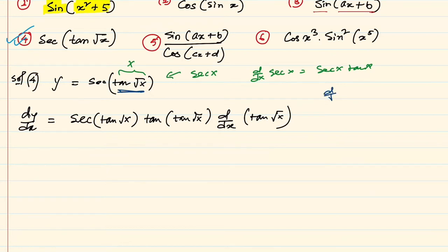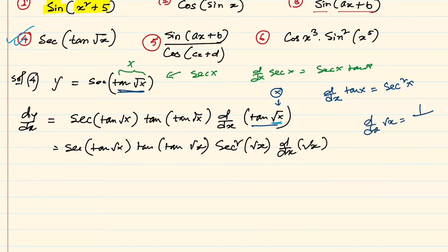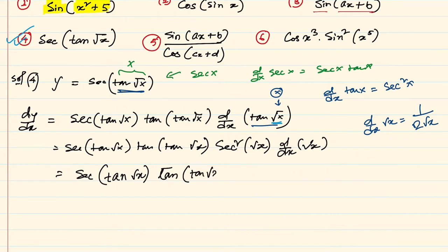Therefore dy/dx = sec(tan(√x))·tan(tan(√x)), and then we differentiate tan(√x). Derivative of tan x is sec²x, so treating √x as x we get sec²(√x). Then we differentiate √x, and the derivative of √x is 1/(2√x). So the result is sec(tan(√x))·tan(tan(√x))·sec²(√x)·(1/(2√x)).